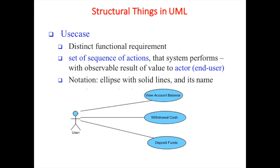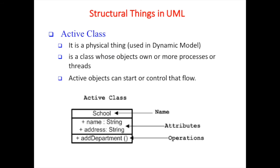Use case is a set of sequences of actions or scenarios which will be implemented by a different actor - it could be a primary actor or secondary actor - that the system performs with observable result of value to the actor. Actors are individuals, and the notation for use case is an ellipse. For interaction, we draw the user, and it will interact with the use case by a solid line.